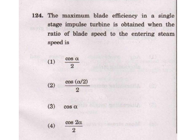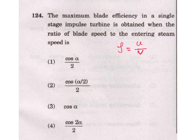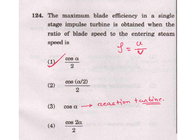The maximum blade efficiency in a single-stage impulse turbine is obtained when the ratio of blade speed to entering steam speed is how much. This ratio is called rho (ρ), where blade speed is u and entering steam speed is V, so ρ = u/V. For an impulse turbine, the value for maximum efficiency is cos α / 2. For a reaction turbine it is cos α. In IES also they asked this — cos α / 2n, where n is the number of stages.